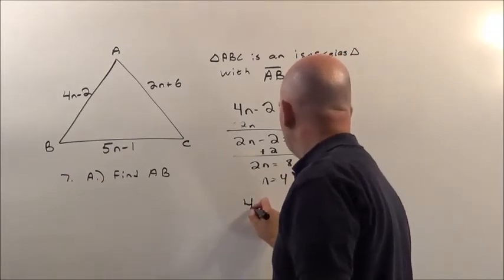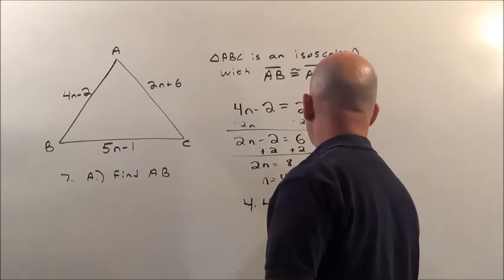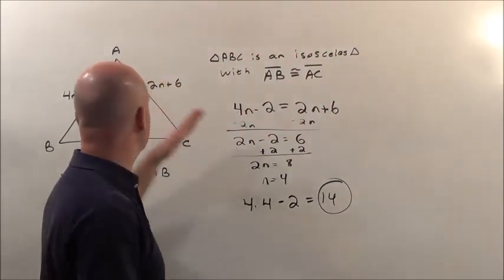So it's 4 times whatever n is, which is 4, take away 2. 16 take away 2, 14. That's going to be our answer to this length.